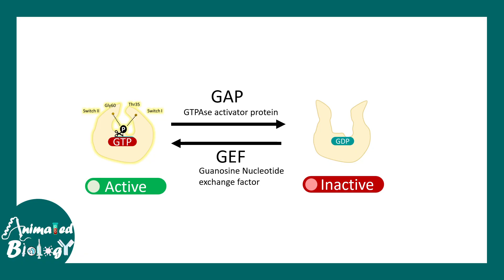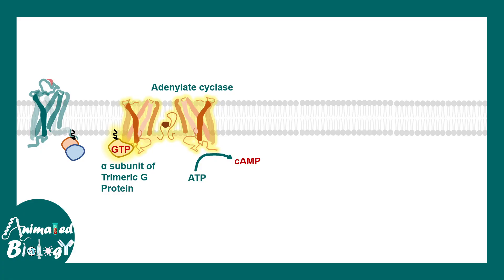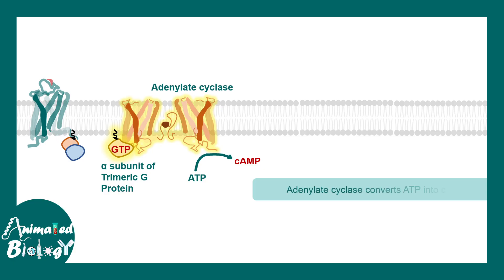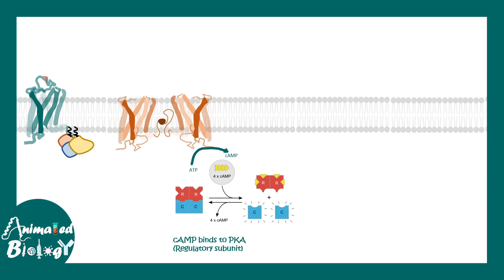Guanine nucleotide exchange factors (GEFs) help in the activation of these G proteins. The GαS subunit bound to GTP can activate adenylate cyclase, a membrane-bound enzyme capable of producing cyclic AMP. Cyclic AMP is a second messenger — ATP gets converted into cyclic AMP, and multiple rounds of cyclic AMP production happen.